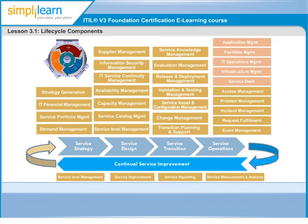Now let's look at the graphic on the side. It illustrates the service life cycle components, which are nothing but the constituent processes and functions. Vertical boxes in the dark shades represent the different processes in that particular life cycle. For example, in the service strategy life cycle phase, we have strategy generation and demand management. The light shaded boxes in service operations represent functions in that life cycle. Do not panic with so many new terms — we will learn about them as we progress in this course.